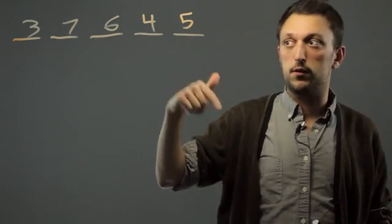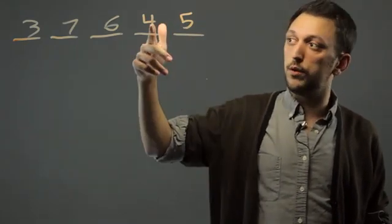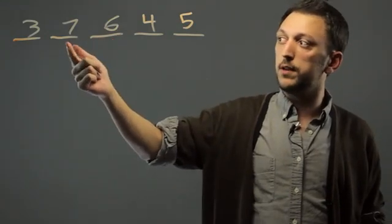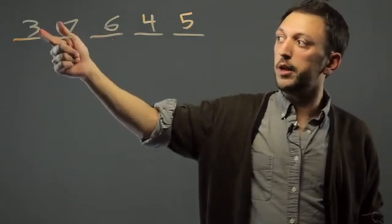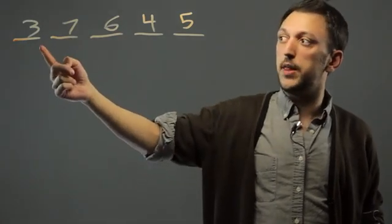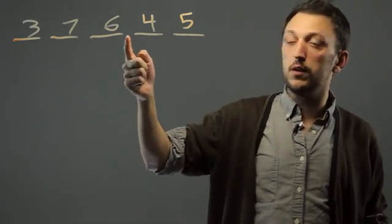So this is 5, and it's also in the 1's place. 4 is in the 10's place. 6 is in the 100's place. 7 is in the 1,000's place. 3 is in the 10,000's place. So the students should be able to identify this as 37,645.